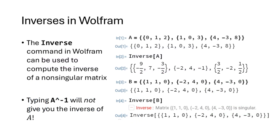You can use the minus 1 button on your calculator to find the inverse of a matrix. In Wolfram, there's a separate command called Inverse with a capital I and square brackets. If you try raising your matrix to the minus 1 power in Wolfram, it will take the reciprocal of each entry, which is not the inverse of that matrix.